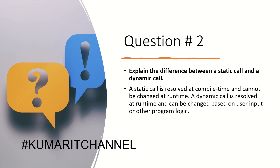Question number two: explain the difference between a static call and a dynamic call. The general answer is: a static call is resolved at compile time and cannot be changed at runtime. A dynamic call is resolved at runtime and can be changed based on user input or other program logic.